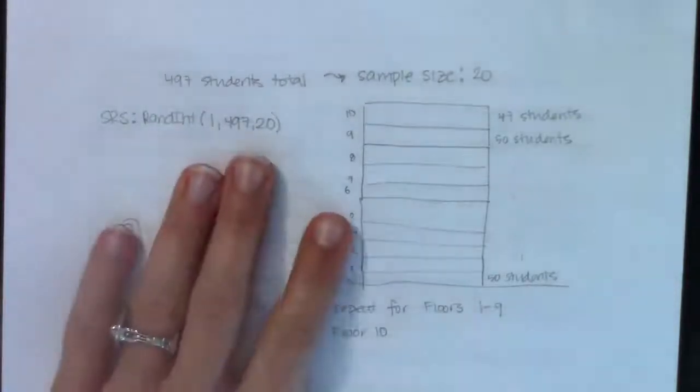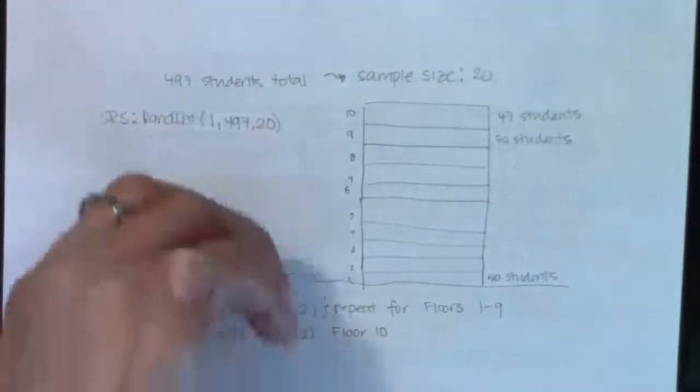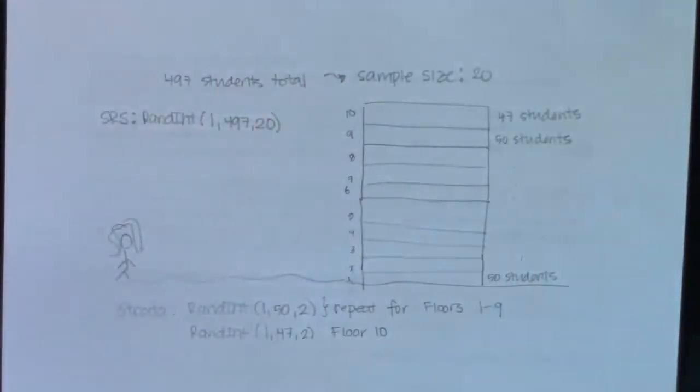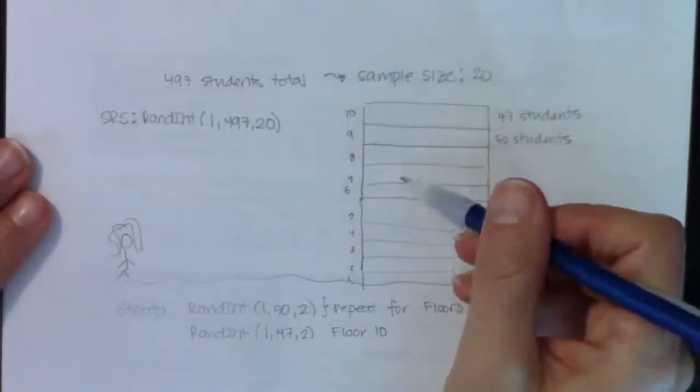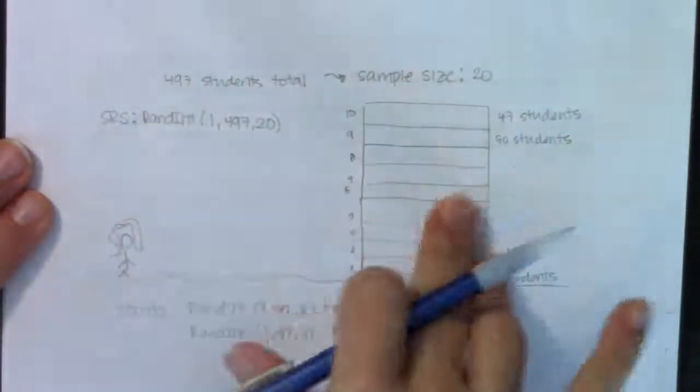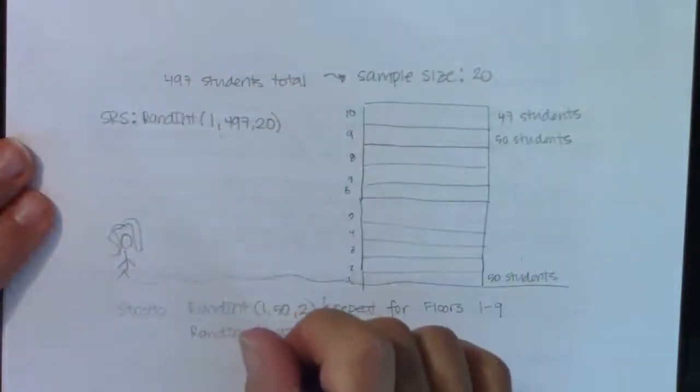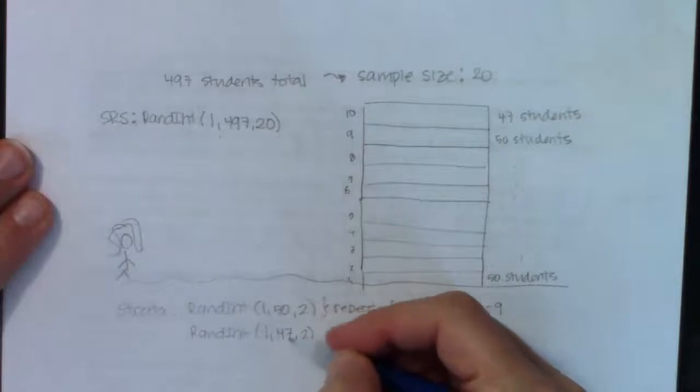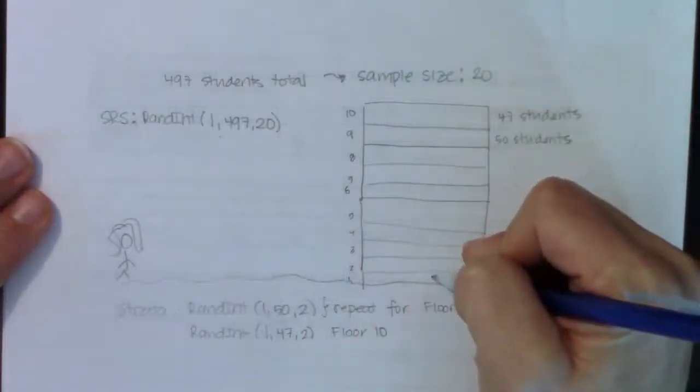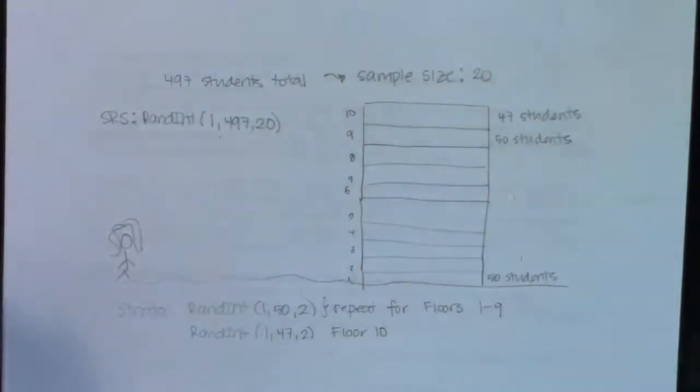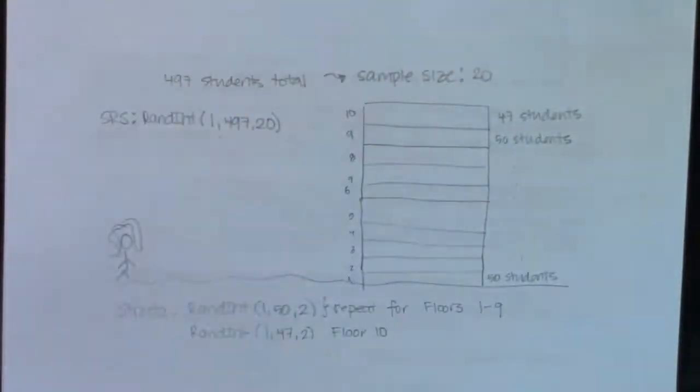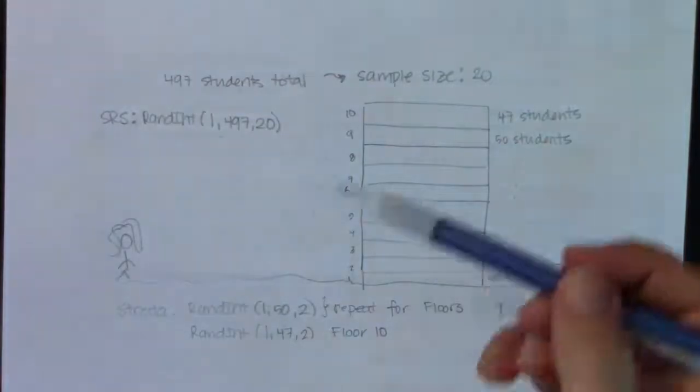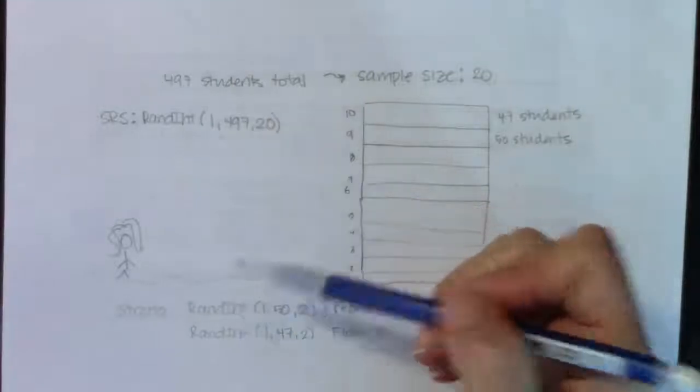If you did this SRS, is it possible when you get done that all 20 of your students came from floor 1? It's possible. It's not likely, but it's possible. It's possible that you leave off floors 7 and 8 just by chance. Any group is possible in an SRS. But when you group ahead of time, certain groups are no longer possible on the back end. When I stratify, is it possible anymore that all 20 of my students came from floor 1? No, that group is no longer possible. And because every group isn't possible anymore, these stratifying samples fail to meet the definition of an SRS.